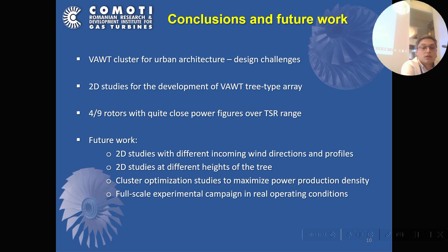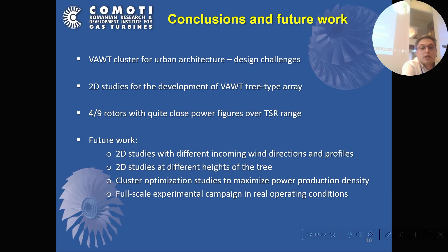As future work — and we have a lot to do — we plan to perform 2D studies at different heights of the tree, and 2D studies with different incoming wind directions and profiles, because the urban environment is characterized by high unsteadiness. Last but not least, we are currently in the manufacturing progress of a full-scale experimental model of the tree that we are going to test in real operating conditions at our facility in the Danube Delta, close to the Black Sea.